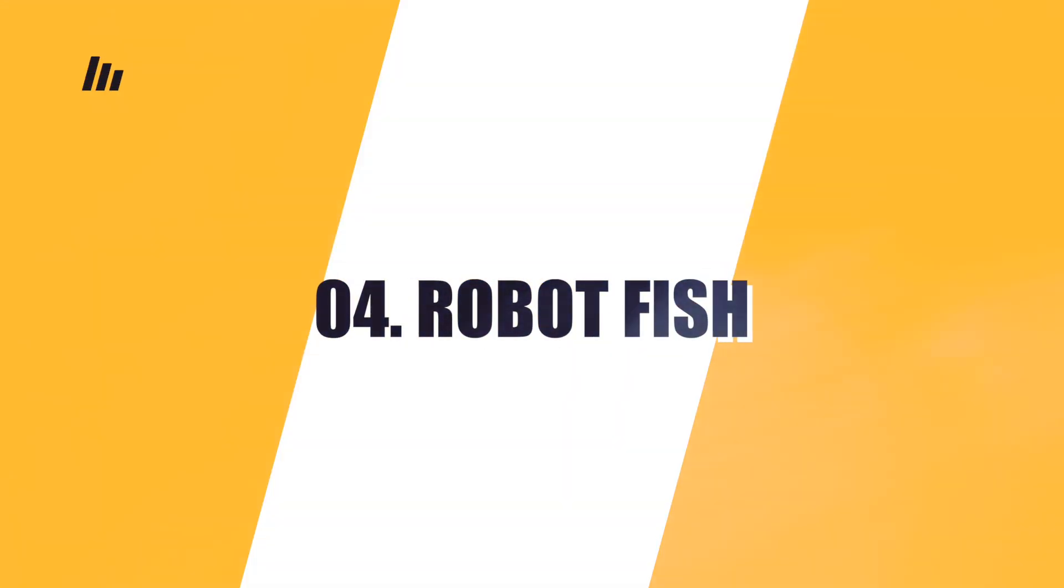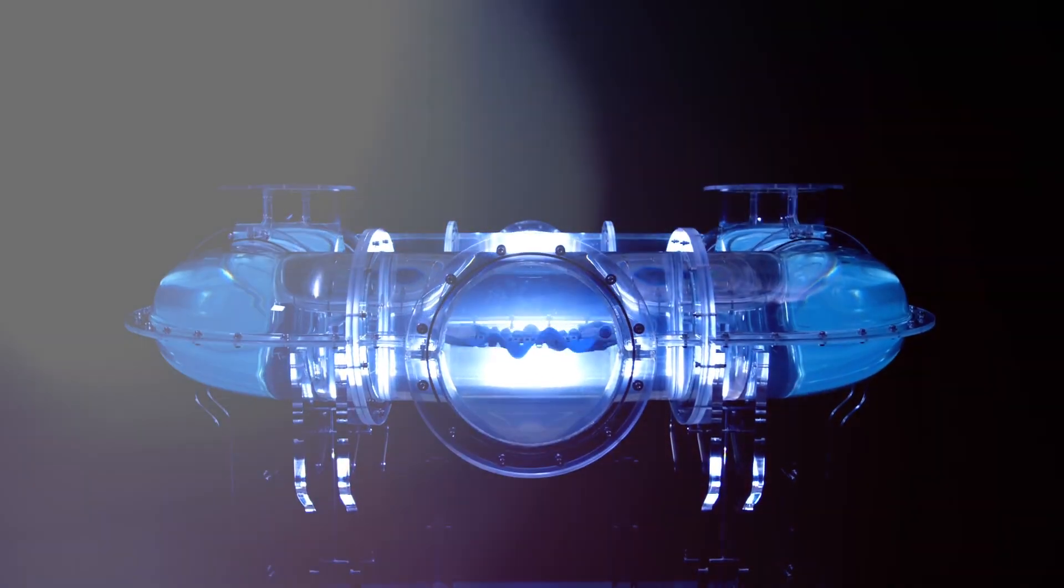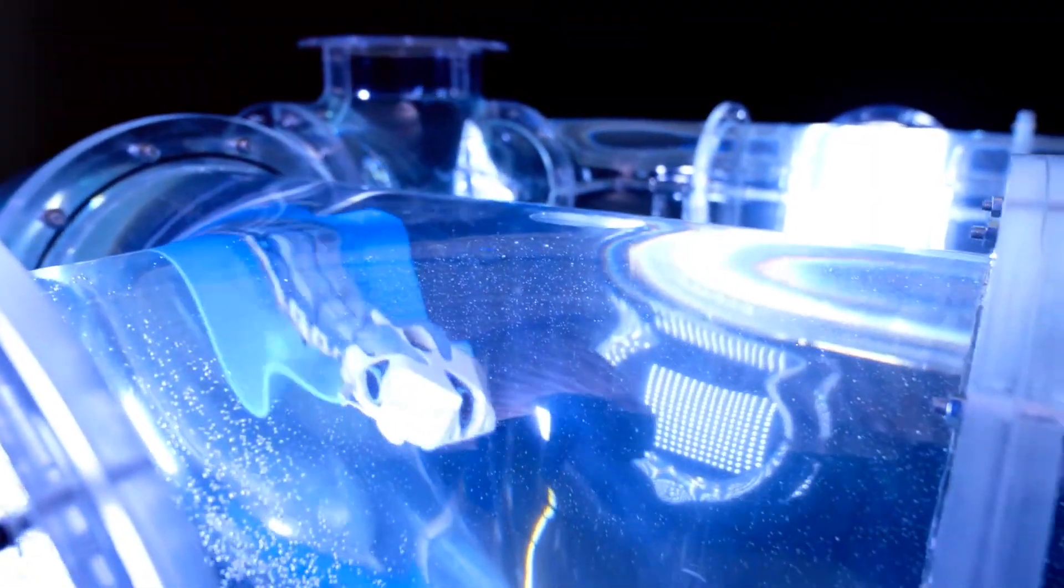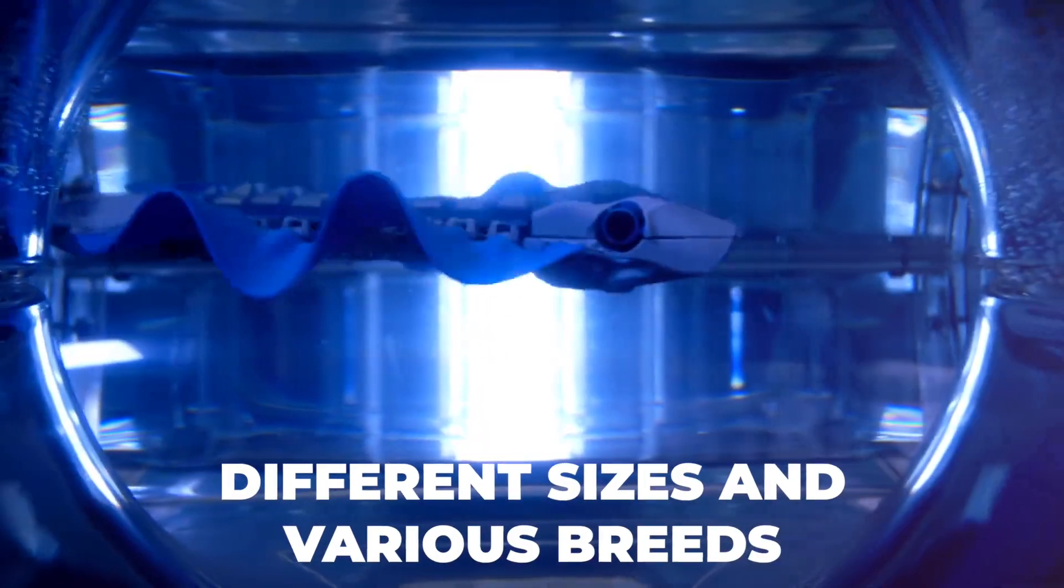Number 4: Robot Fish. First, it can be said that this particular robot came out very beautiful. It turned out so impressive because with the next level inventions, it completely imitates all the habits and movements of fish, and can easily be confused with the real one. Today, several dozen of these robotic fish are in different sizes and various breeds.